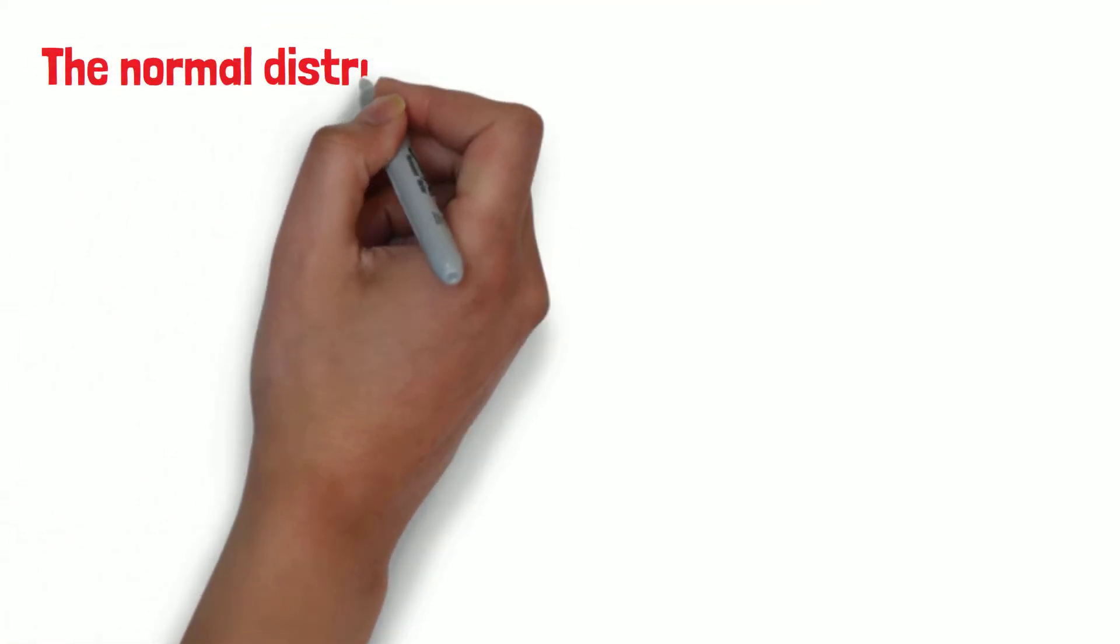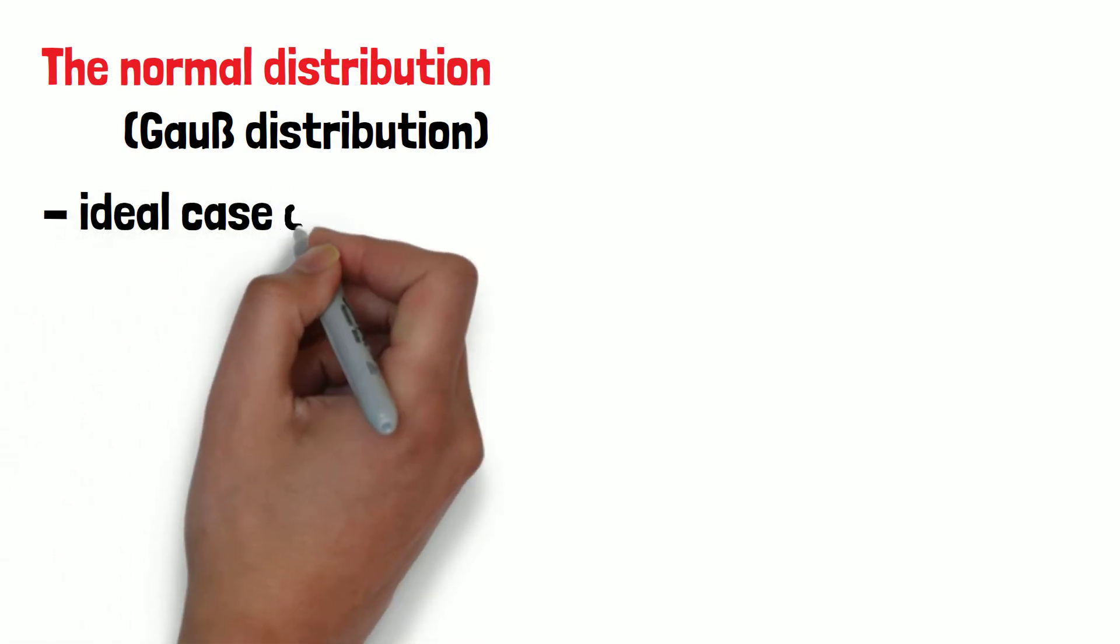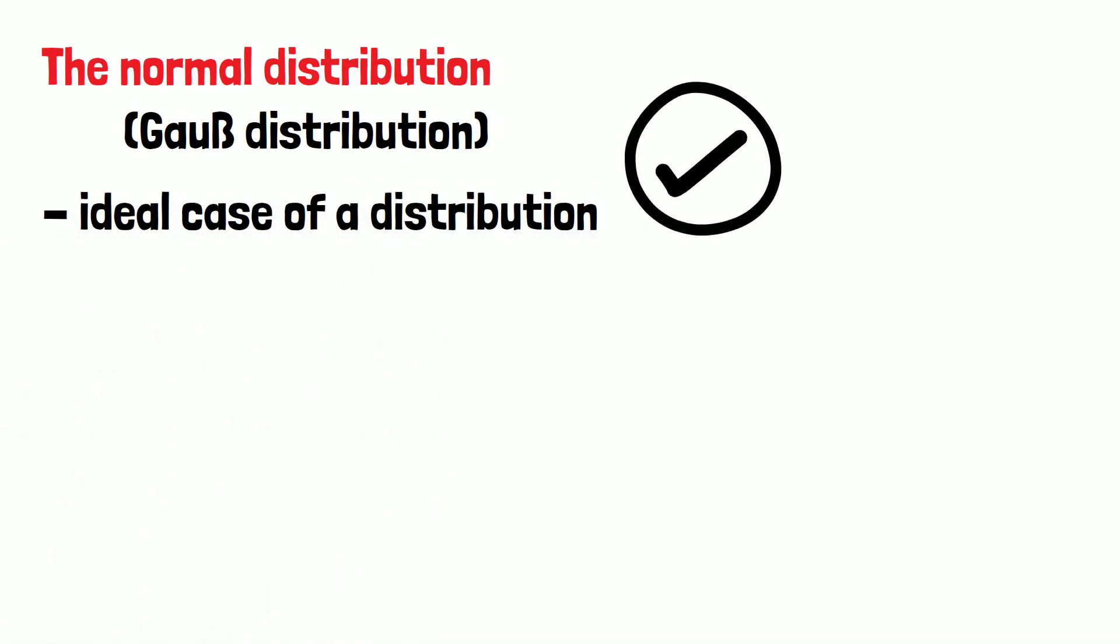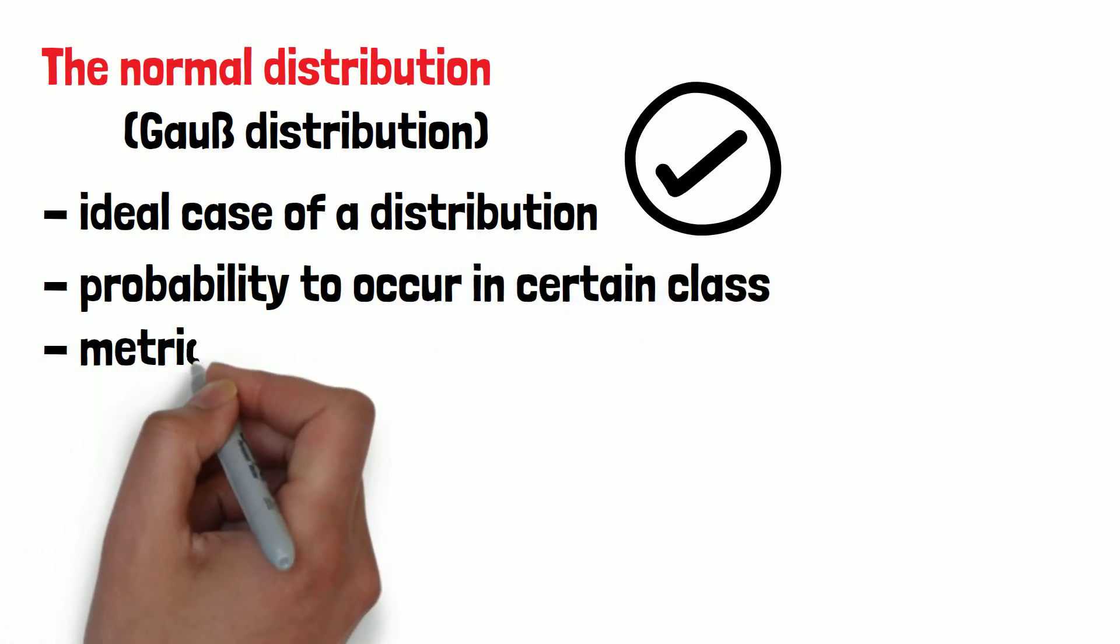The normal distribution or Gauss distribution is called normal as it is seen as the ideal case of a distribution. It is showing the distribution of the probability of an observation to occur in a certain class for metric data.